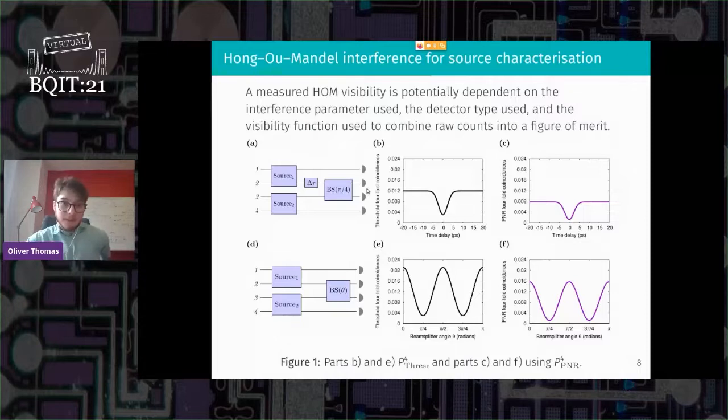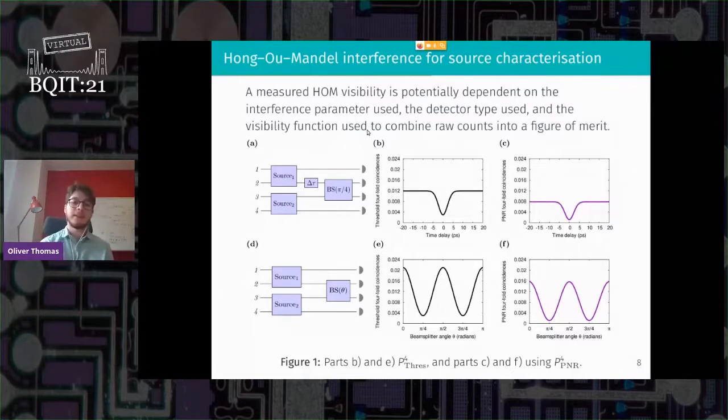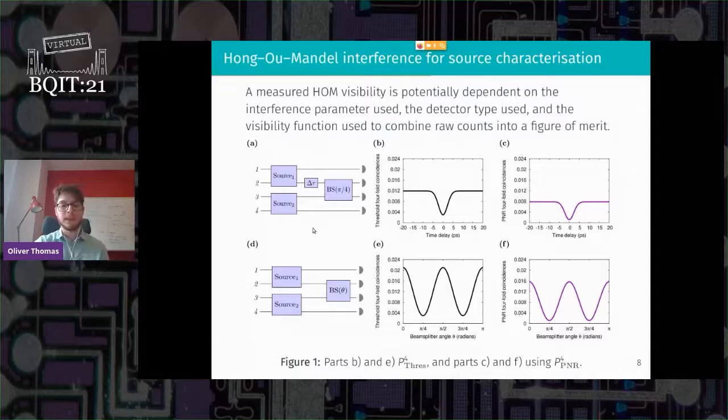And then one thing we talked about, which hadn't been made super clearly in one place, is there's like three ingredients to this whole visibility. So there's the interference parameter you use, which depends more on your platform and what you have available experimentally. So here we consider two cases. The first one is like a traditional time delay HOM dip. So you have a fixed 50-50 beam splitter and you vary a time delay in one of the interfering arms. And then the second kind of interference parameter is a variable beam splitter, like a Mach-Zehnder interferometer where you tune a phase. And so the important point is your HOM dips are obviously different shapes.